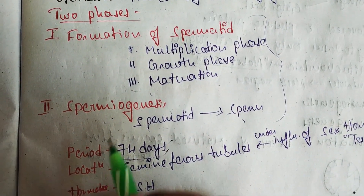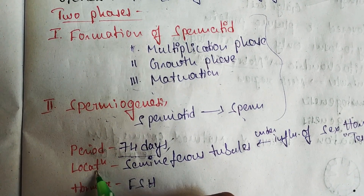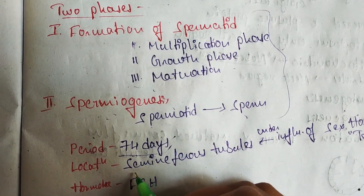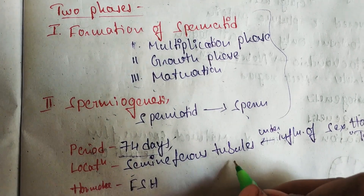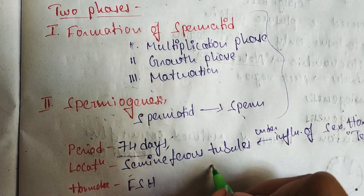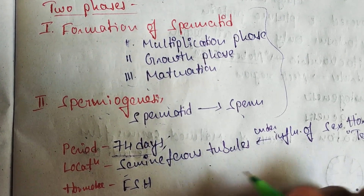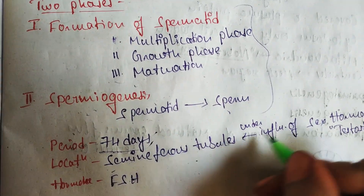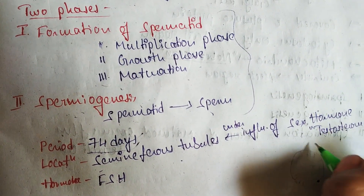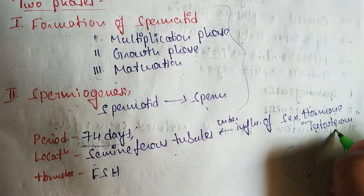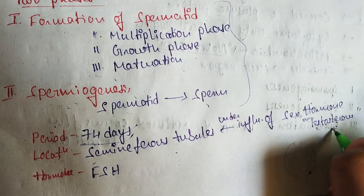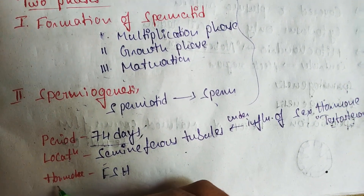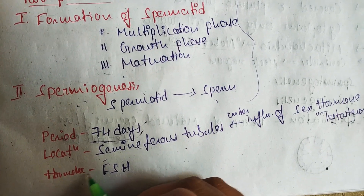The location of spermatogenesis is the seminiferous tubules, which are present in the testes. This process runs under the influence of sex hormones, that is testosterone, which is produced at puberty.